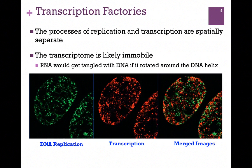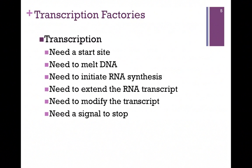The transcriptome — the machinery of transcription — is likely immobile, just as we saw in the case of DNA synthesis; otherwise the RNA would tend to get tangled with the DNA as the machinery tried to rotate around the DNA helix. In the process of transcription we need first a place to start on that DNA molecule, we need to separate the two strands or melt the DNA, we need a way to begin RNA synthesis, and then we need to continue to extend that transcript until we reach a stopping point.